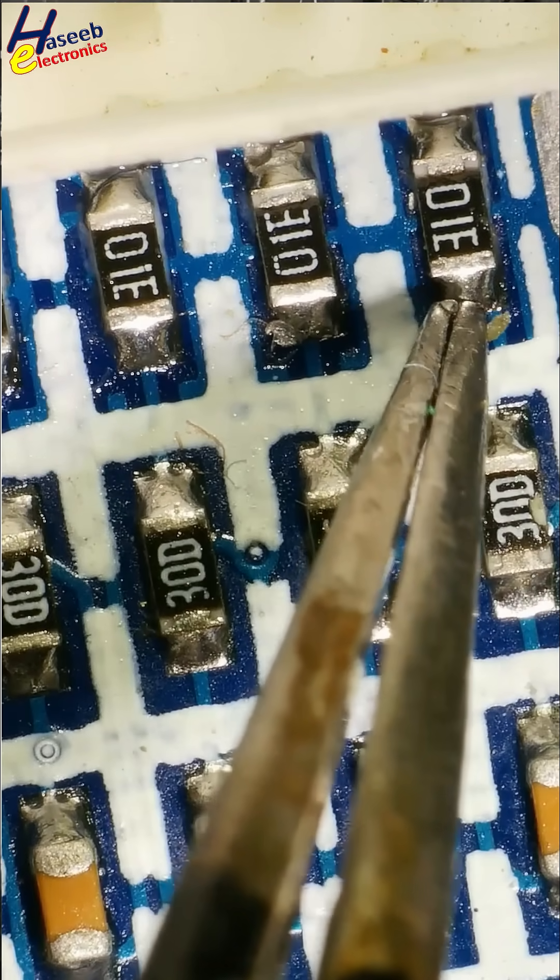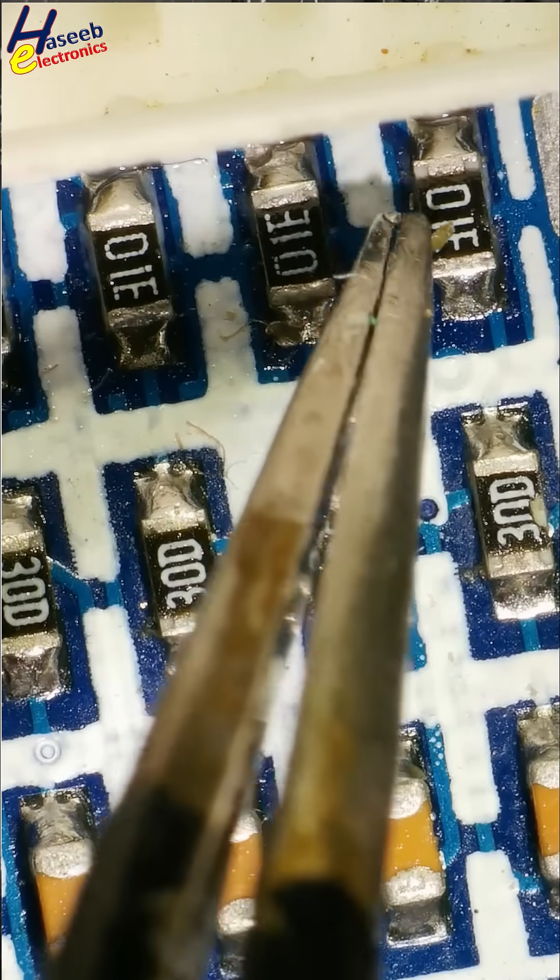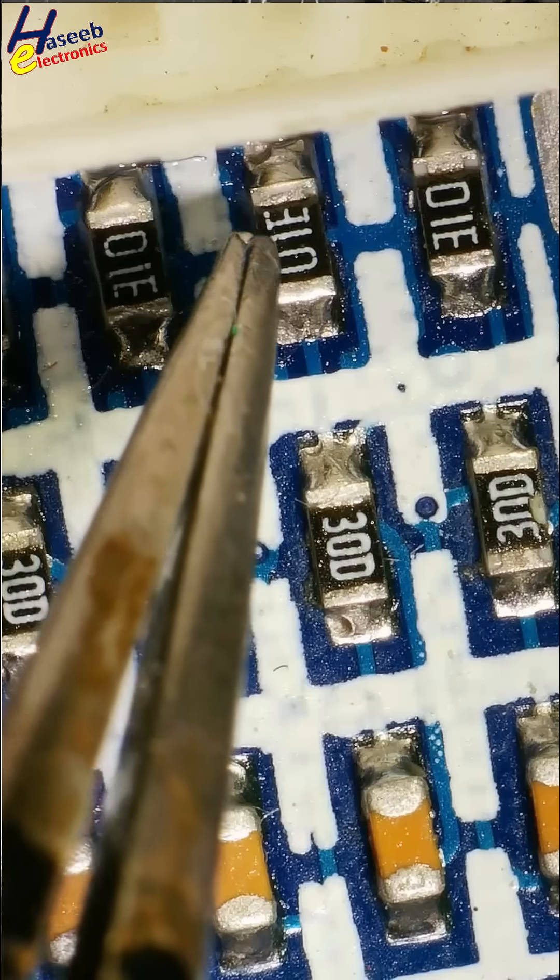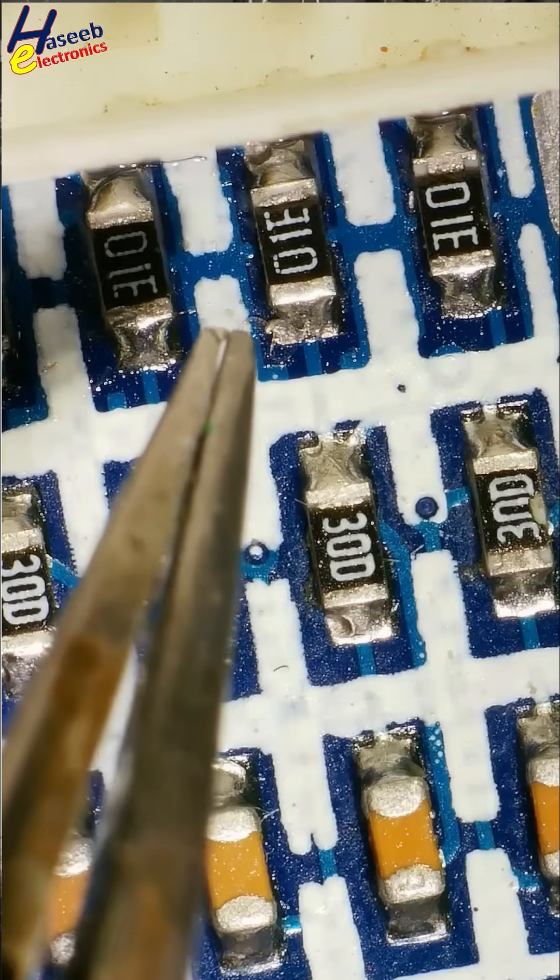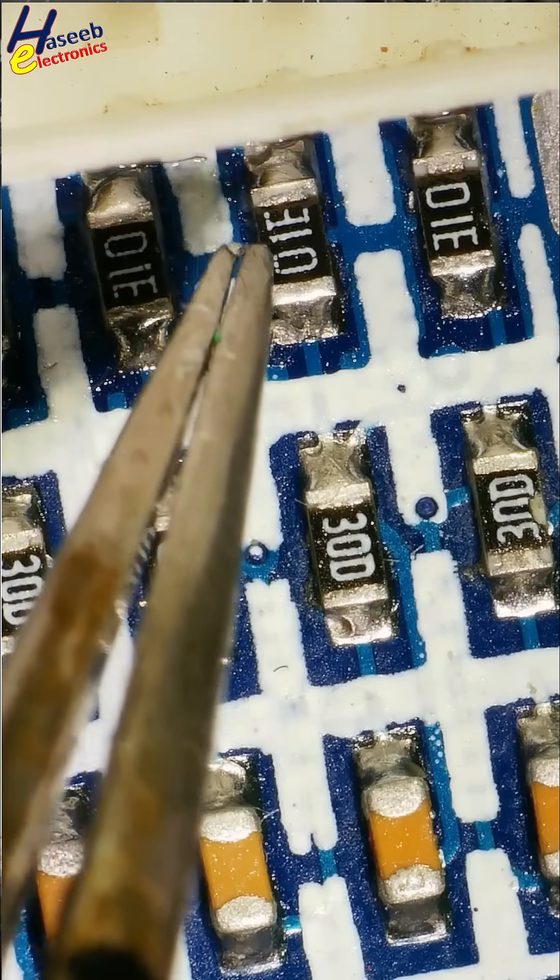Let's decode this SMT resistor code. It is 01E. If we read this code, it is looking like 310, but it is not 310.